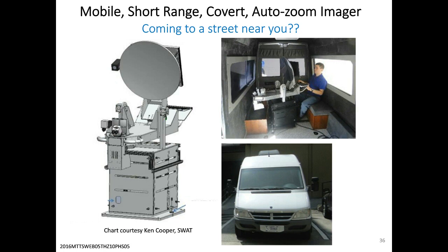We were able to do multi-pixel imaging — Ken is now up to almost 8 simultaneous pixels, but at that time we were doing 2 pixels — achieving 1-second imaging and going through garments as thick as a wool coat. This is a very powerful technique. We ended up building a system inside a van for covert imaging — a smaller system with about 40-centimeter aperture, imaging at 10 meters through a window in the van, all compact, delivered to our sponsor. Then sequestration happened, and that was pretty much the end of that program for a while.